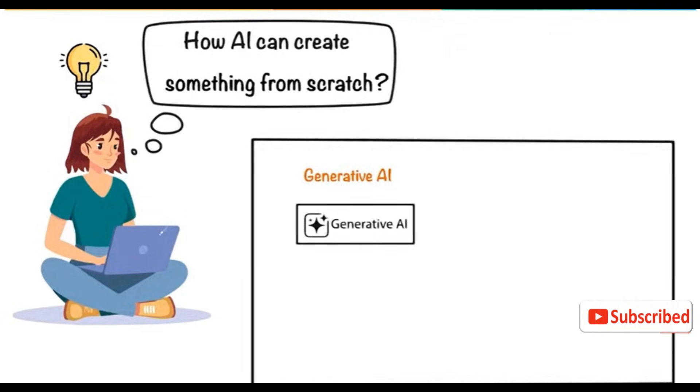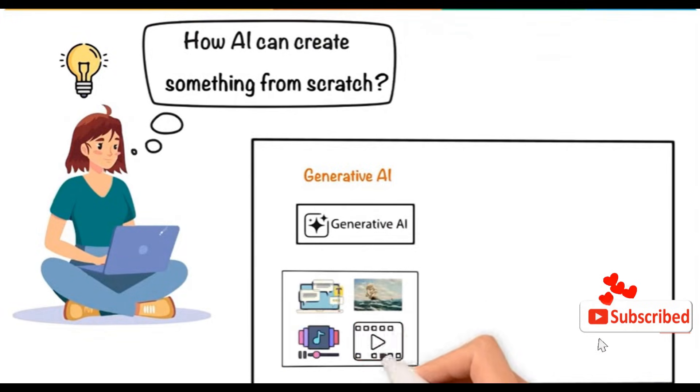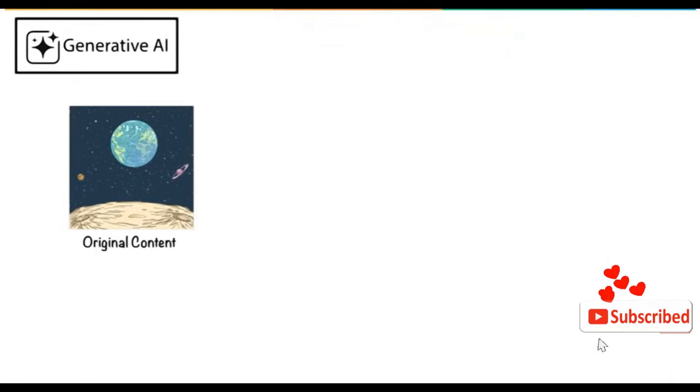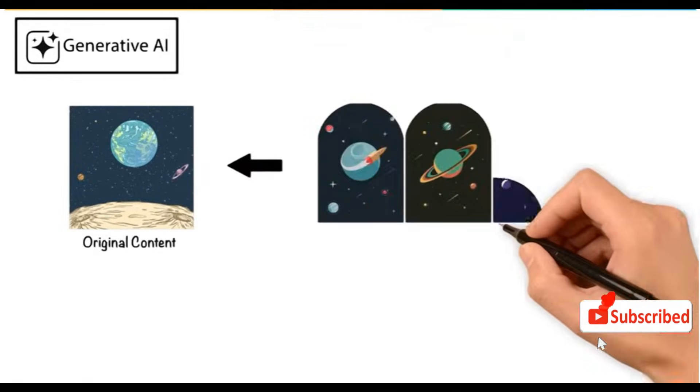Generative AI refers to a type of artificial intelligence designed to create new content, such as text, images, music, and videos. Unlike traditional AI, which analyzes or categorizes data, Generative AI produces original content based on patterns learned from vast data sets.